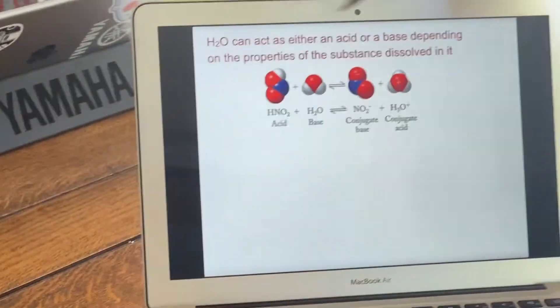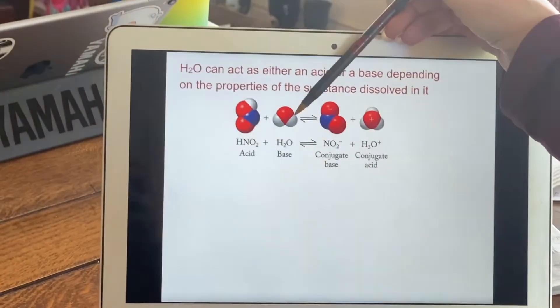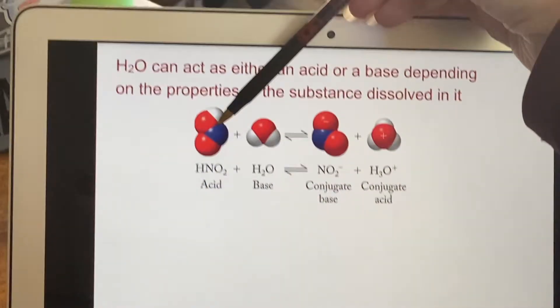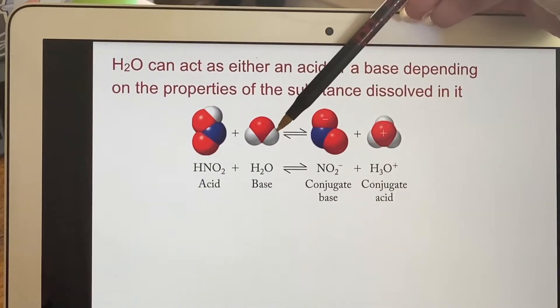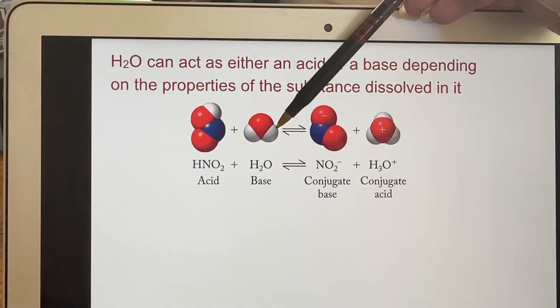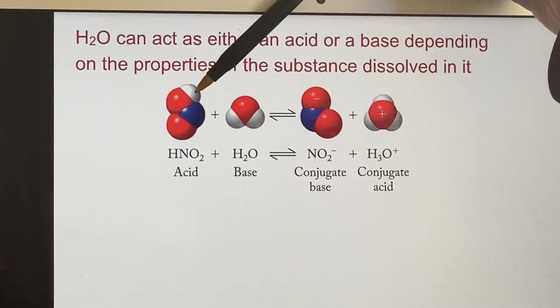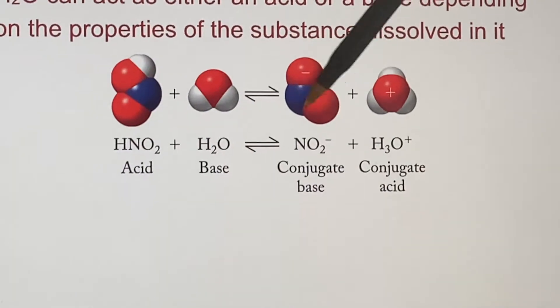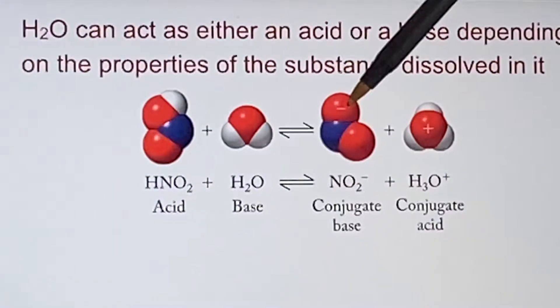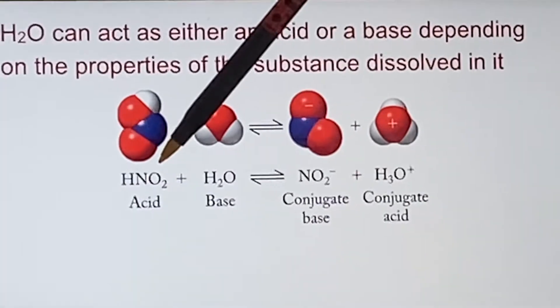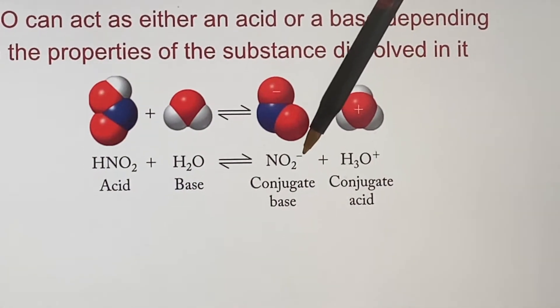So here for example, here's an acid being dissolved in water. Well, if that's an acid, I'm forcing this to act as a base. This is going to donate an H+. When it does, it's going to end up here. It's going to end up with a negative charge because before it was neutral and it's giving up H+, so now it's negative.